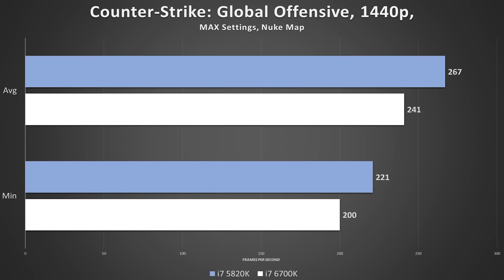Let's change it up with Counter-Strike: Global Offensive. This one surprised me — we're looking at FPS disparities in the 20s across the board, signaling an interesting shift in game optimization. These are very high frame rates, so our CPUs are being heavily leveraged, perhaps explaining the difference. Extra threads can go a long way for a few games.